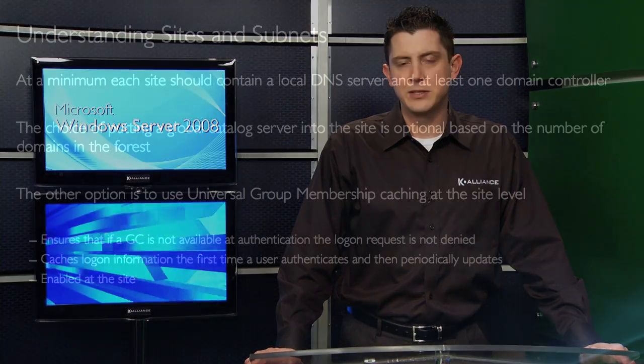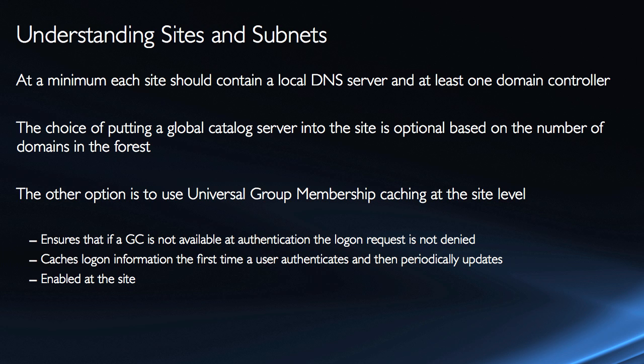If you only have a single domain, then every machine should be a global catalog server, because they are not going to have any more information than any other domain controller. Thus, it will not increase replication, but it allows them to perform functions like expanding universal group membership and facilitating user principal name logins. So if you only have one domain, every DC should be a global catalog. If you have more than one domain, making a machine a global catalog server in a site can greatly increase the amount of replication to that machine. You have to be careful, and the decision will be based on the number of users in the site, site-aware applications in the site, and the amount of bandwidth available on the WAN link for replication — all factors in determining whether to place a global catalog server in that site.